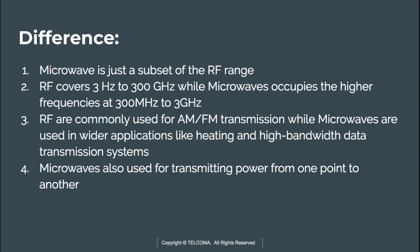Coming to the difference between microwave and RF: microwave is a subset of the RF range. RF is commonly used for amplitude modulation and frequency modulation transmission, while microwaves are used in wider applications like heating and high-bandwidth data transmission. Microwaves are used for transmitting power from one point to another in the form of line-of-sight communication.